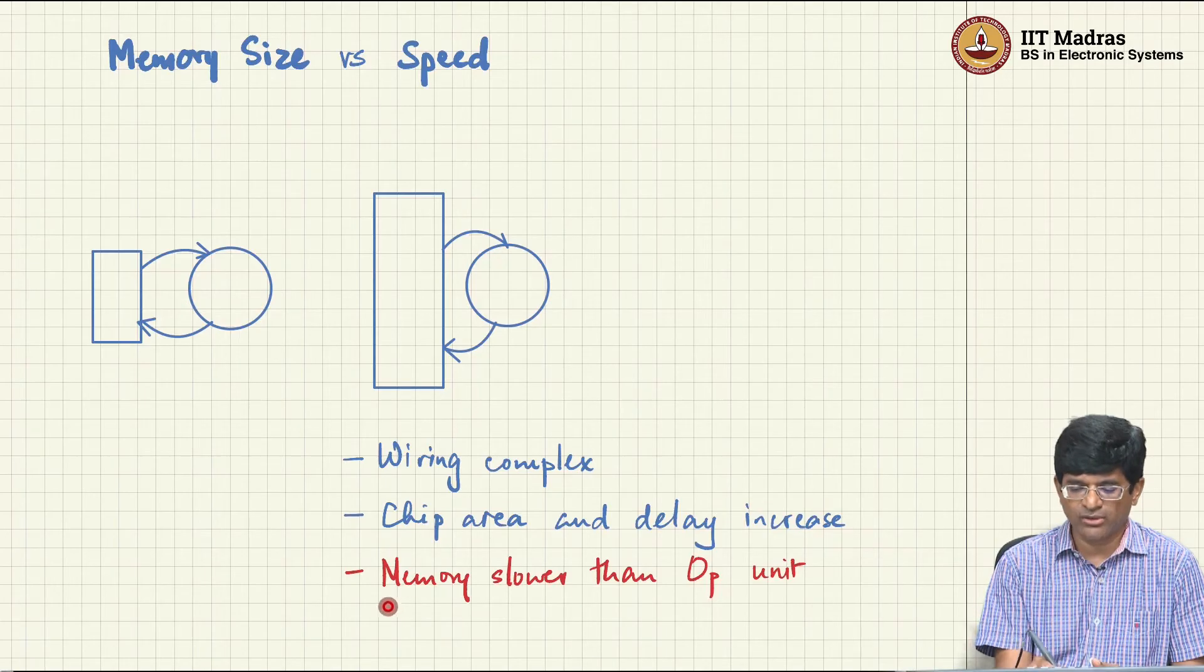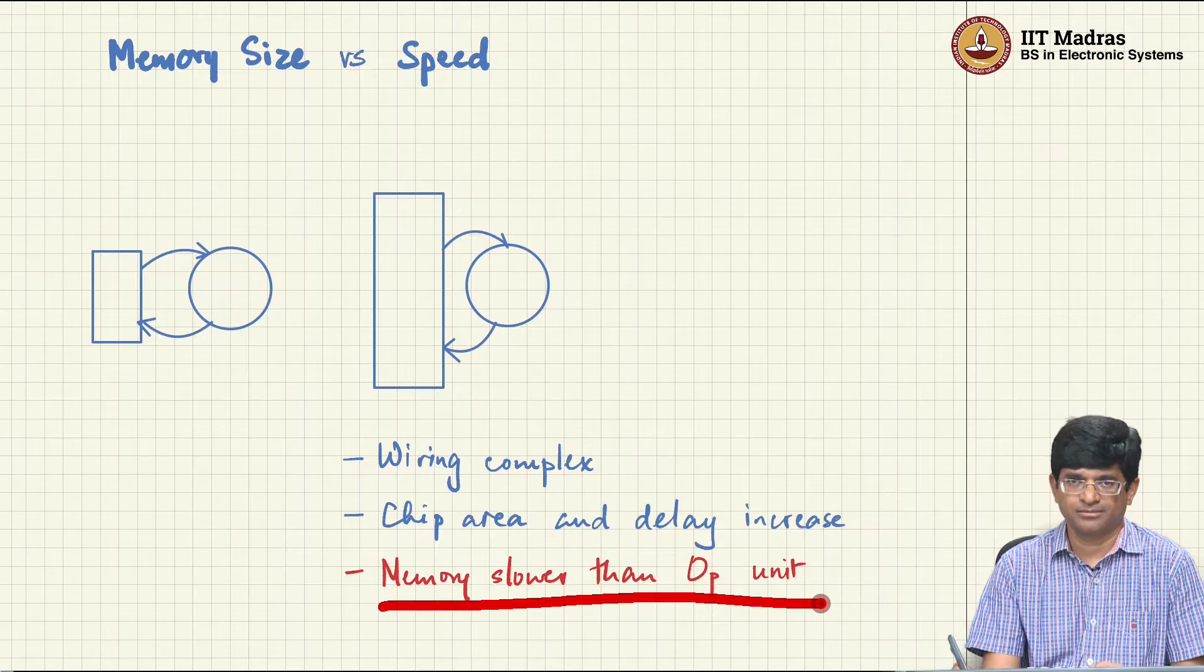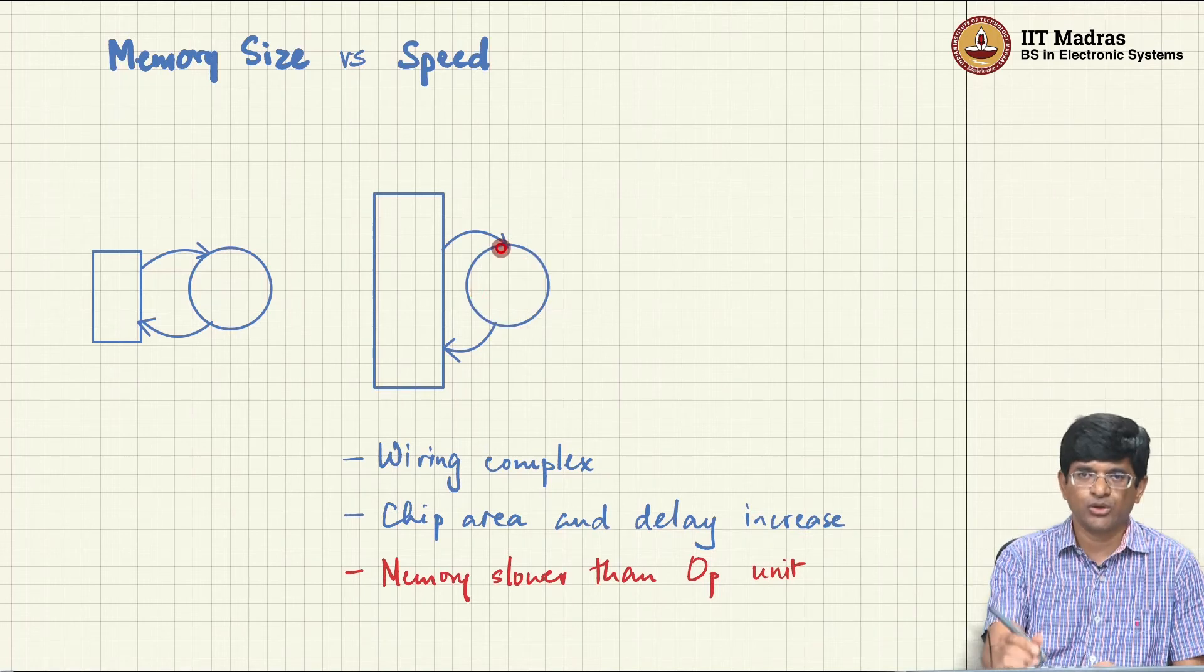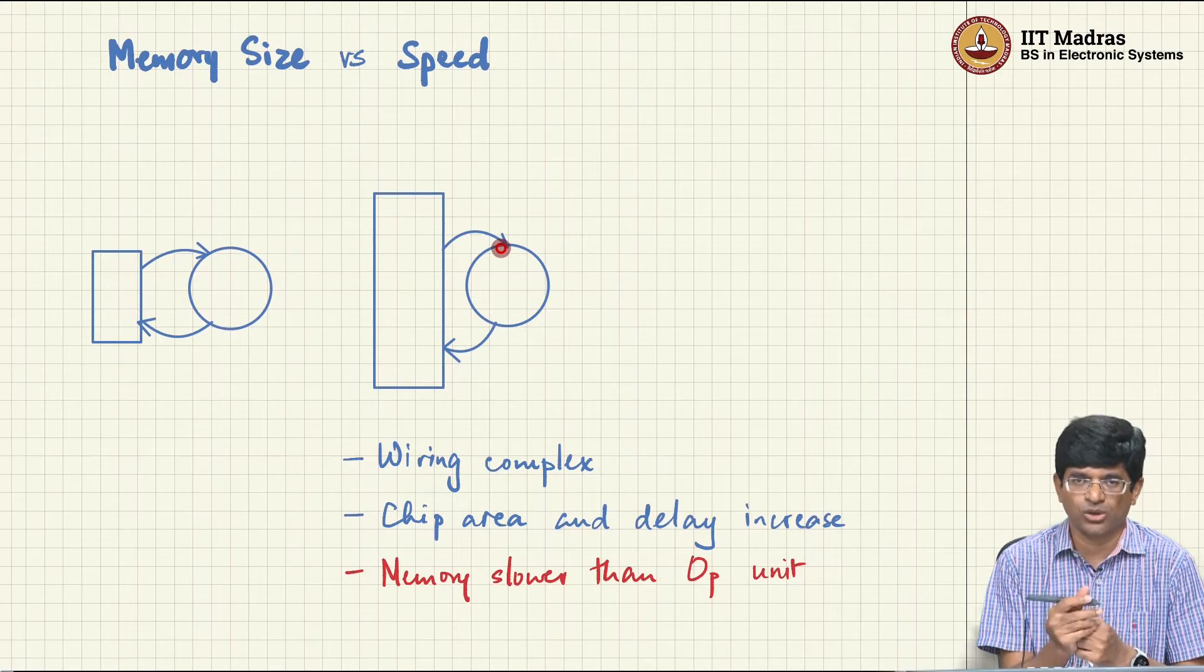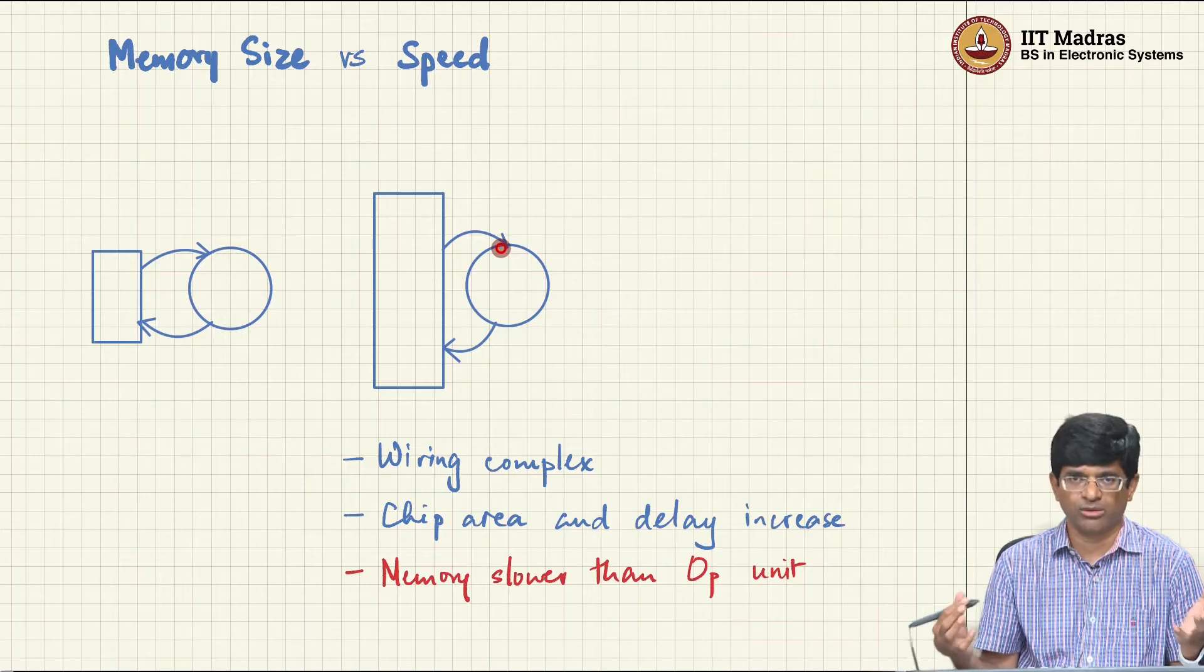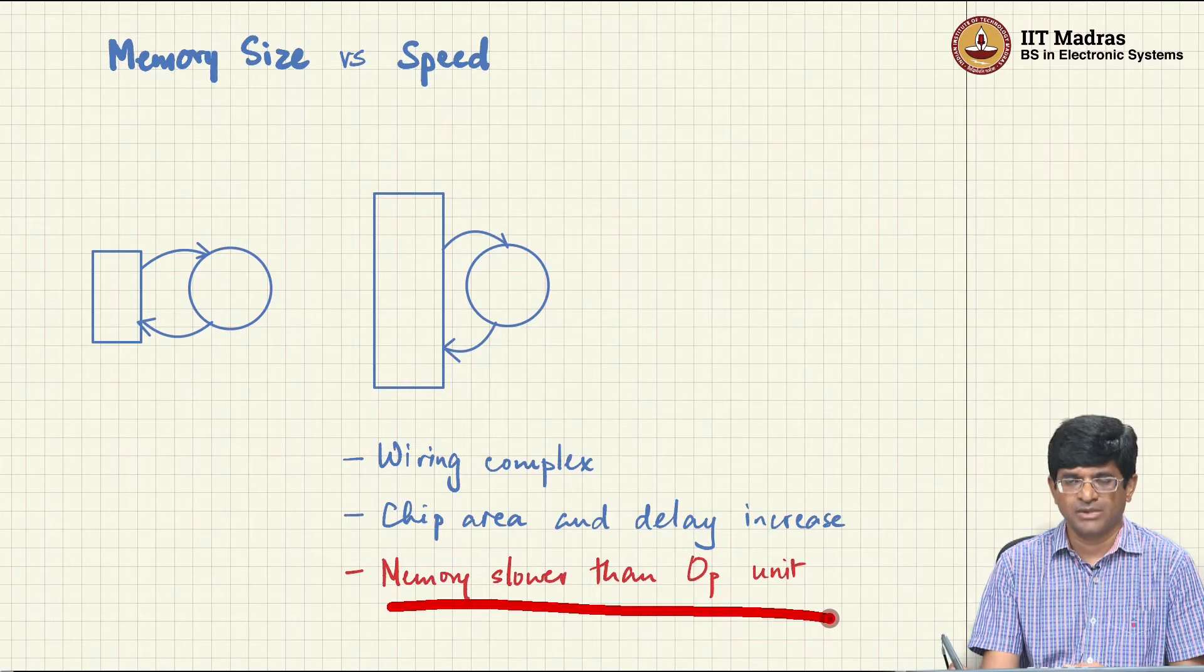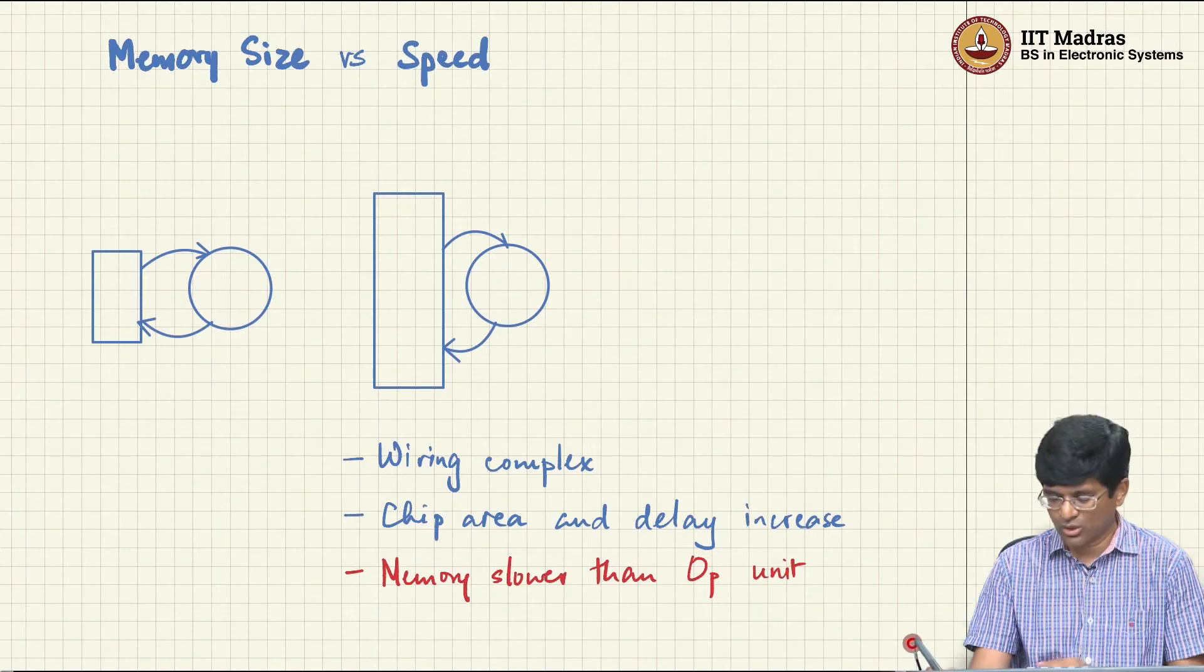What usually happens when something becomes larger is that it also becomes slower. Naturally at this point the memory starts to become slower than the operational unit, the ALU. The ALU is still something relatively small, taking two numbers, adding them or multiplying them together. But this memory is starting to expand. I want to store more and more stuff in it, but that means it is getting more complicated. And it starts to become slower.